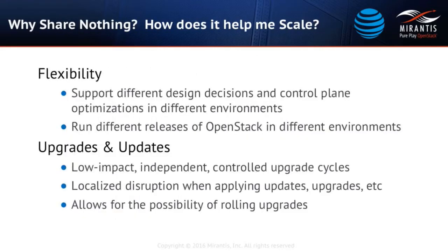So why are we doing shared-nothing? One key reason is flexibility. We want to be able to support different design decisions for different optimizations. There's really no one-size-fits-all control plane configuration that will work for all your use cases. In a diverse organization like AT&T, you have all these different use cases, and it makes sense to have the flexibility to achieve that diversity. Another example is running different releases of OpenStack in different environments, decoupling those dependencies you had in hub-and-spokes topology.